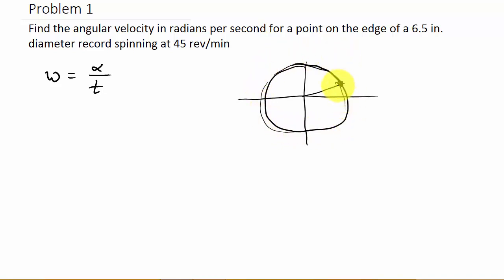360 degrees or 2 pi. If it goes around again, that's 4 pi, 6 pi, 8 pi, 10 pi. Well, what we know is that alpha in one minute, it goes around 45 times. So what's the total angle that it went in one minute? Well, each time it goes around, that's 2 pi radians. And it went around 45 times. So alpha is 2 pi times 45, and that is 90 pi.